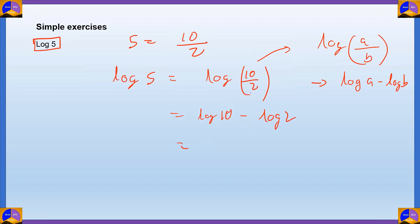So log 5, we can write that as log 10 by 2. And we can write that as log A minus log B. So log 10 minus log 2. For those of you who have studied logarithms, you'll know that log 1 is 0 and log 10 is 1. And you should have memorized that the value of log 2 is 0.3, which will give us 0.7 as our approximate value for log 5. Simple.